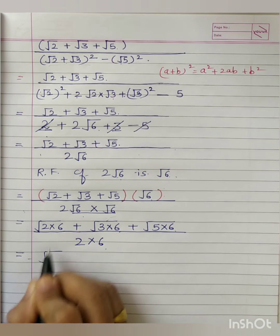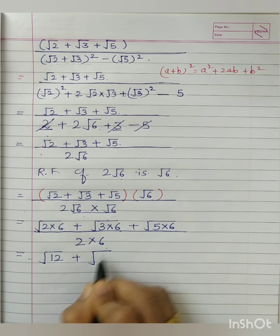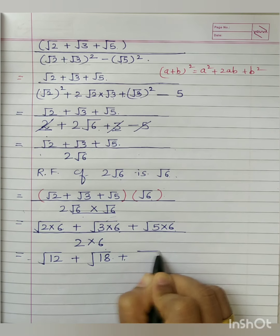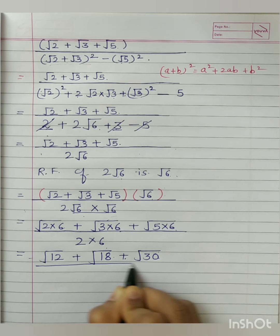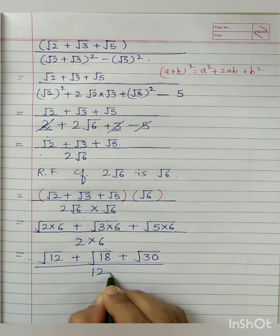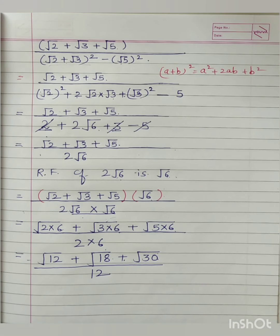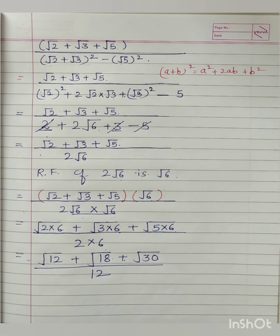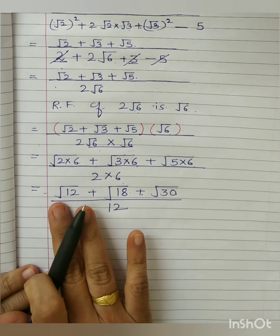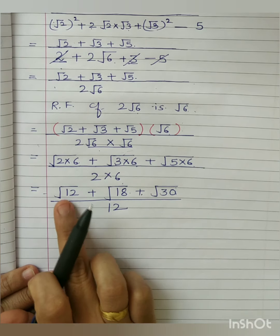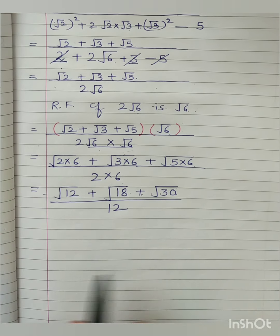In the numerator: root 12, plus root 18, plus root 30, all upon 12. Our purpose is solved — we have the denominator as a rational number. But we can apply further knowledge here. Root 12, root 18, and root 30 are three separate pure surds. If we can express them as mixed surds, we shall try. Can you find a perfect square factor in 12? Yes — it is 4. Root 18 can also be written as root of 9 times 2.